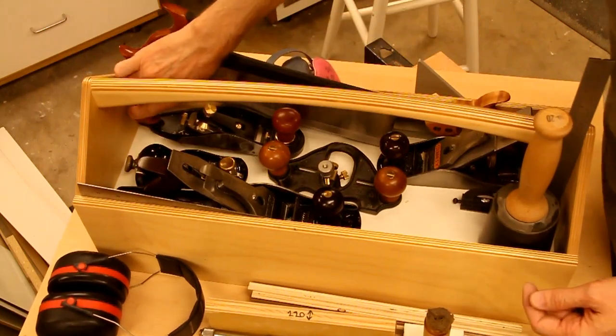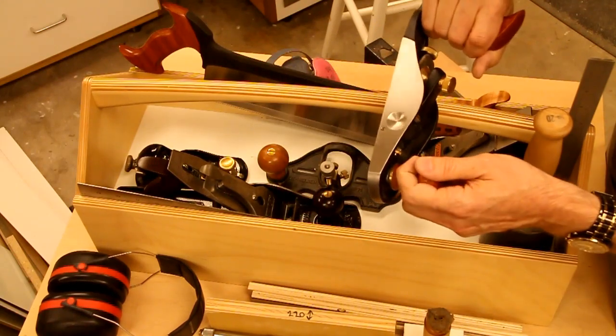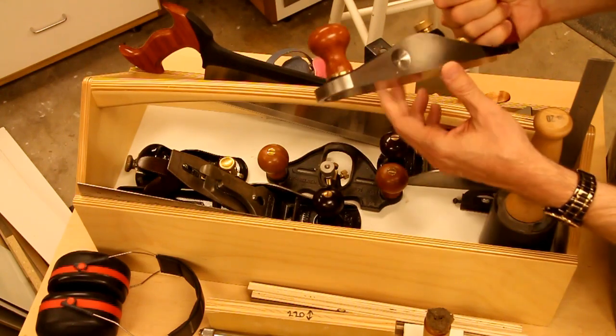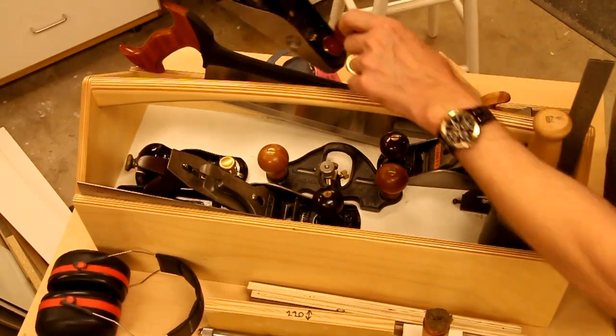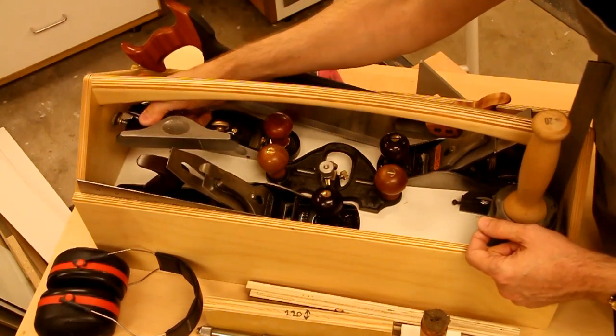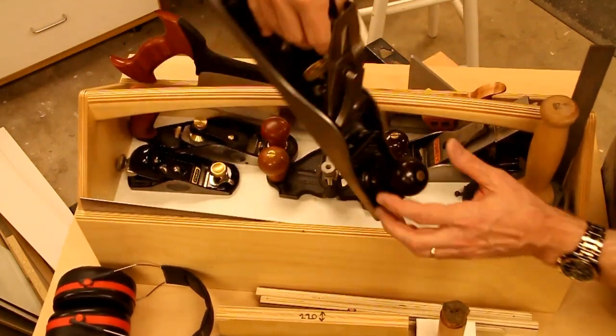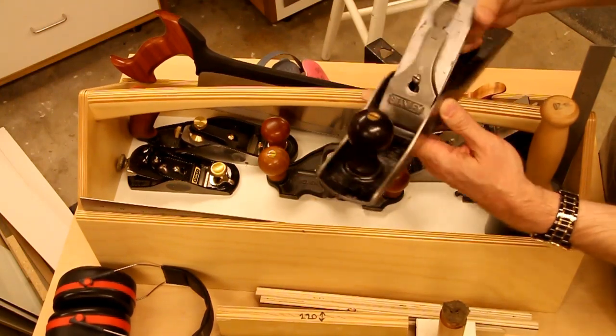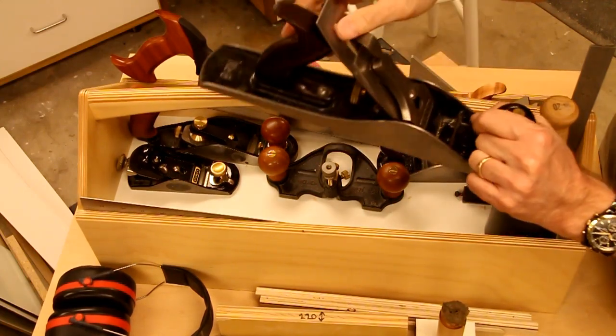For smoothing, I have this Veritas 3. I think this is their small smoothing plane, probably equivalent to a 3. Set for a very fine cut. Works great. Your standard block plane. In this case, a Stanley. And a Sweetheart Stanley. I think from the 40s. This is a jack plane, number 5. Set up just for general purpose use.